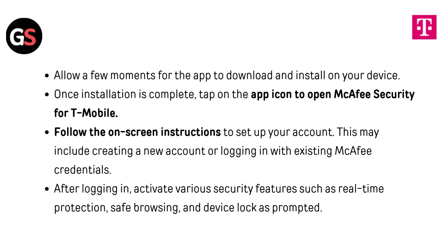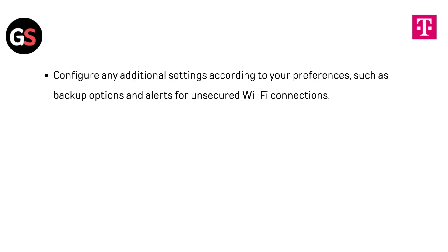Allow a few moments for the app to download and install on your device. Once installation is complete, tap on the app icon to open McAfee Security for T-Mobile. Follow the on-screen instructions to set up your account — this may include creating a new account or logging in with existing McAfee credentials. After logging in, activate various security features such as real-time protection, safe browsing, and device lock as prompted.